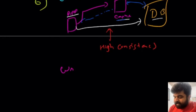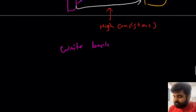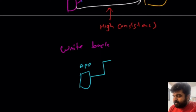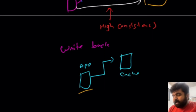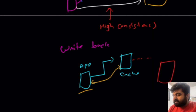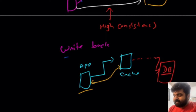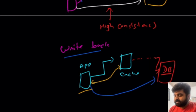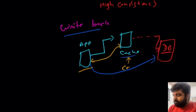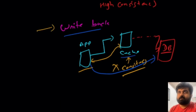In the Write Back policy, whenever the application needs to make any update, we only update the cache. Once the cache is updated, any new application or user wanting that data can quickly retrieve it from the cache. After a predetermined time, we ask the cache to write the data back to the database for long-term persistence. This method enables very fast data retrieval since writing to the database is an expensive operation. However, you can only use this approach when consistency is not a critical issue — if you lose the data, it's acceptable. When consistency is not a concern, Write Back is a good caching strategy.